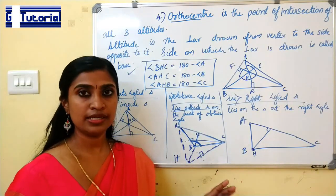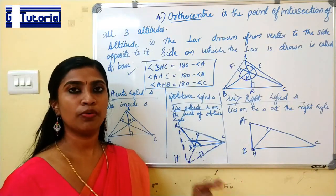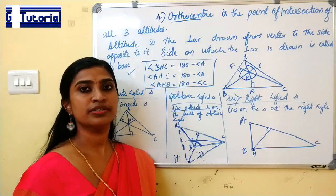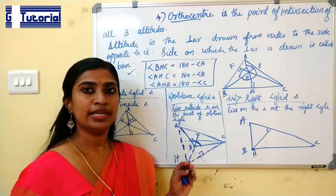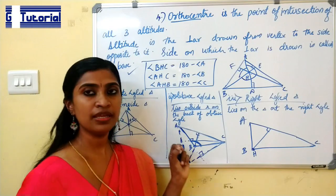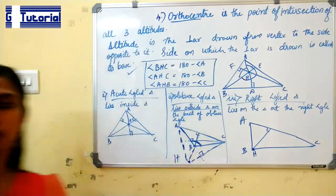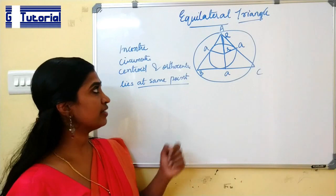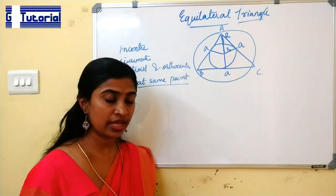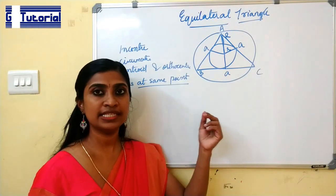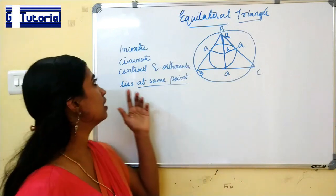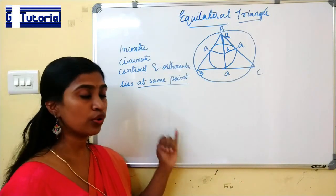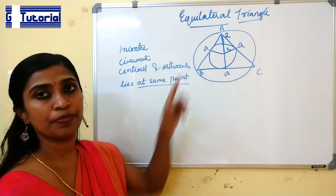We have now studied the four centers and their important properties. Let us note something very important. In the case of an equilateral triangle, all four centers lie at the same point — that is, the incenter, circumcenter, centroid, and orthocenter all coincide within the triangle.